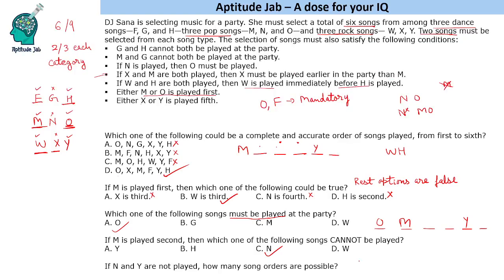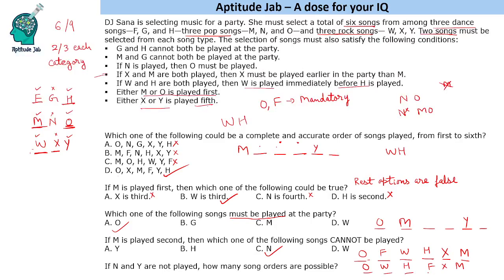Since x and m are both played, x must be before m. The first song must be o. Since y is not played, x must be fifth, which means m is sixth. W and h must appear consecutively with w immediately before h. The remaining song f fills one of the early slots, giving two possible orders: o, f, w, h, x, m or o, w, h, f, x, m. So there are two possible song orders.